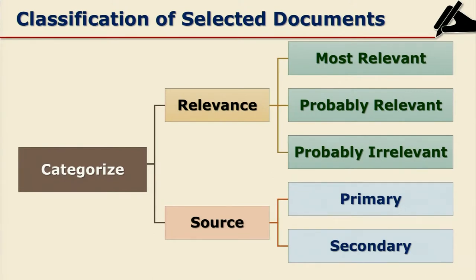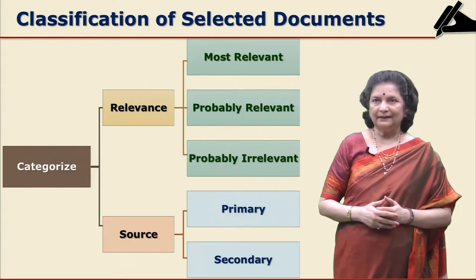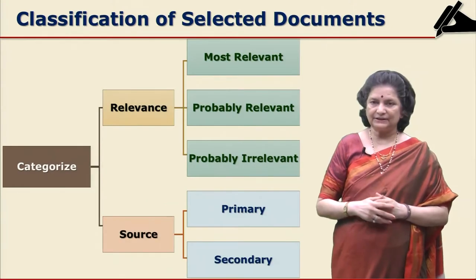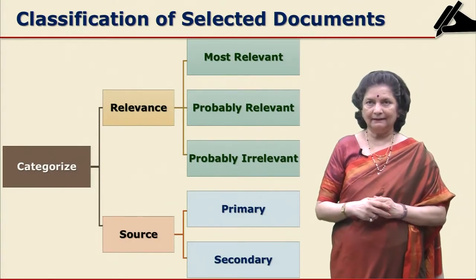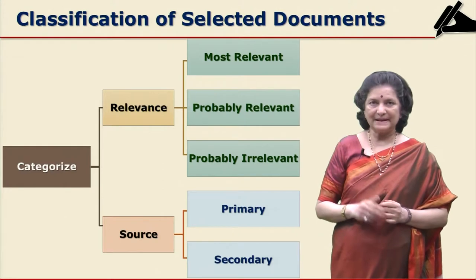First is according to the relevance of your topic, and second is according to source — whether it is primary or secondary sources. For the first category, relevance, you can categorize that into most relevant, probably relevant, and probably irrelevant.